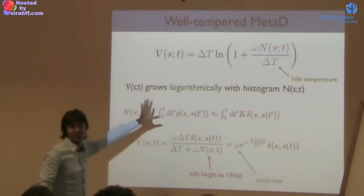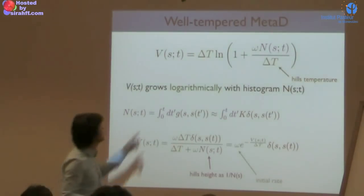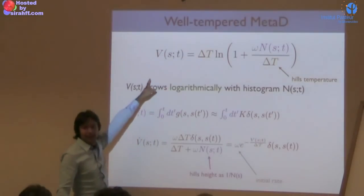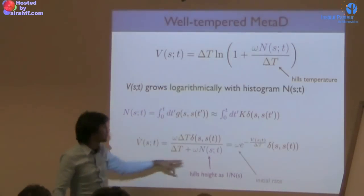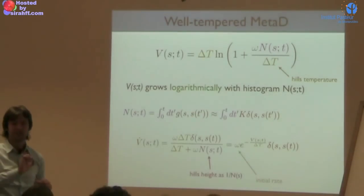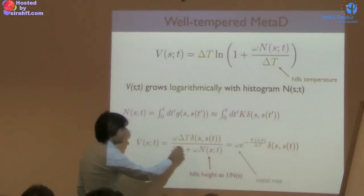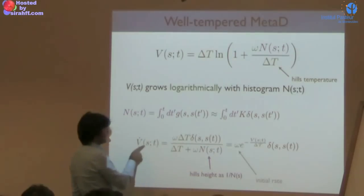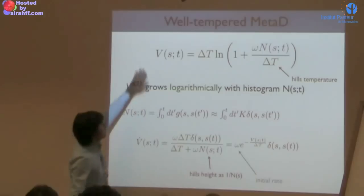Learning from this, we gave the right formulation: instead of building the bias proportional to the histogram, we build it proportional to the logarithm of the histogram. Why? Because then V dot — the rate of bias update — becomes proportional to 1 over the histogram, which is what we wanted. Of course, you can't take 1 over the histogram at the start when it equals zero, so you add a factor: 1 over (A plus the histogram), giving finite hills at the beginning. This equation is exactly equivalent to the previous formulation.